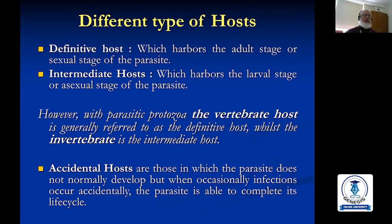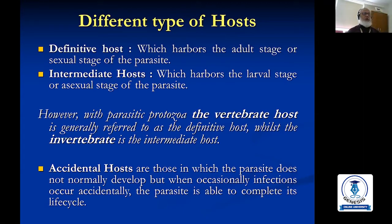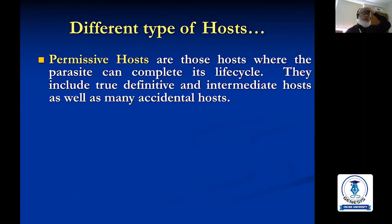Intermediate hosts harbor the larval stage or asexual stage of the parasite. However, with parasitic protozoa, the vertebrate host is generally referred to as the definitive host, and the invertebrate host is the intermediate host. Accidental hosts are those in which the parasite does not normally develop, but when infection occurs accidentally, the parasite is able to complete its life cycle.